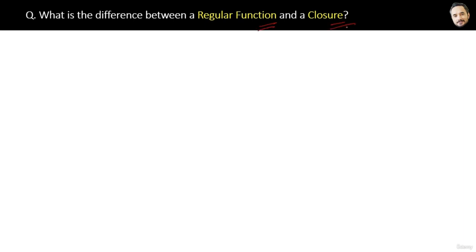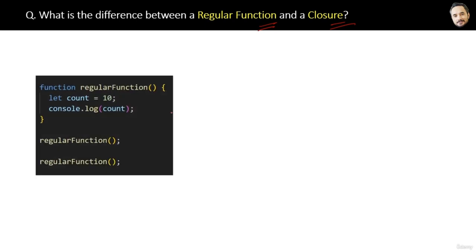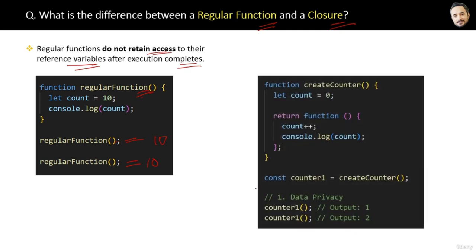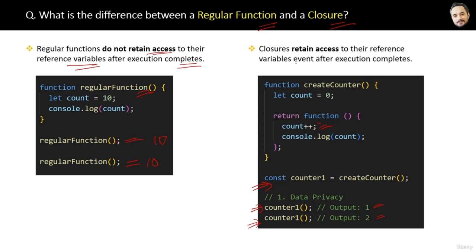What is the difference between a regular function and a closure? With a regular function, calling it logs the value 10, and calling it again also logs 10 — no state maintenance. The conclusion is: regular functions do not retain access to their reference variables after execution completes. With a closure, calling closureOne the first time gives output 1; calling it again increments to 2. The reason is: closures retain access to their reference variables after execution completes — that is the key difference.